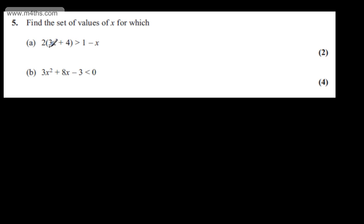So with part (a), we have a linear inequality. All I need to do is expand the brackets on the left. That's going to give me 6x plus 8, and on the right we'll have 1 minus x.